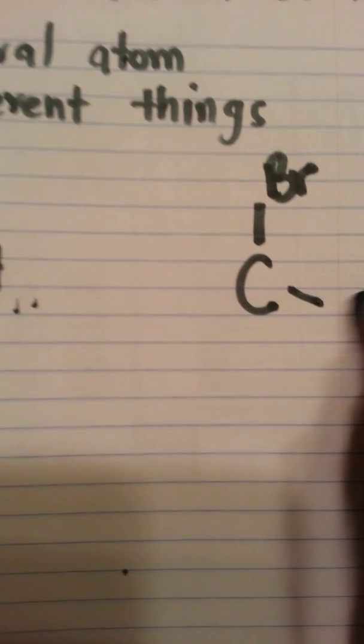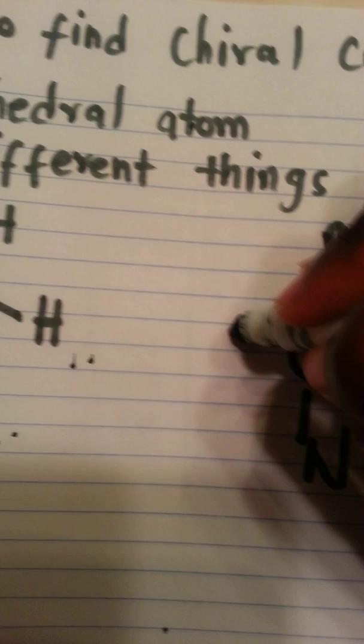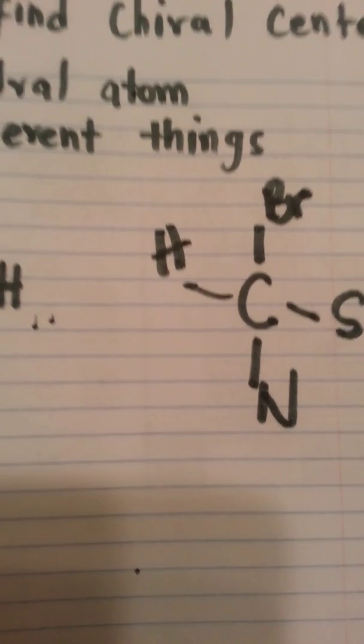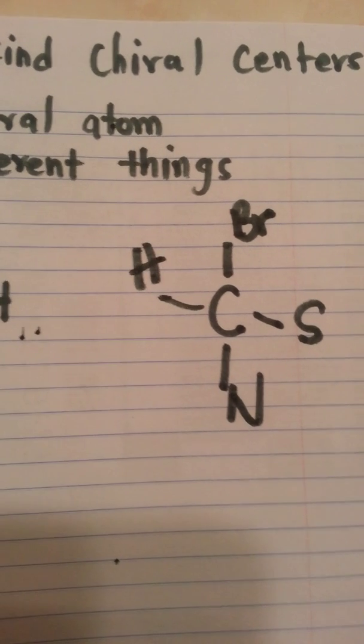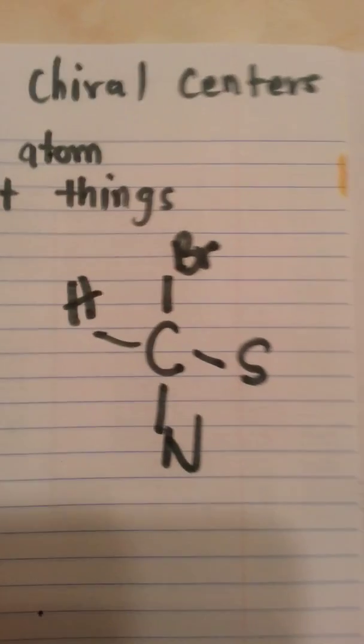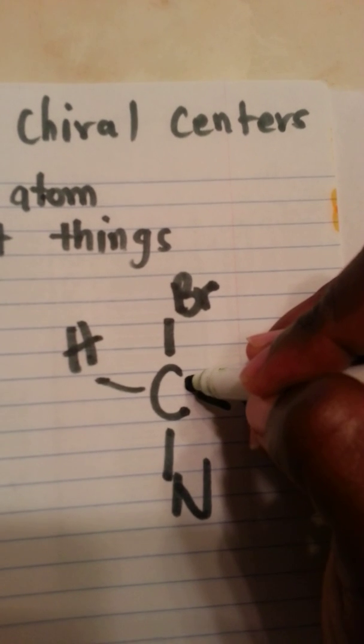In this case, we see that it is bonded to four different things. And hence, this carbon right here—sorry, I was just getting my pen—this carbon right here has a chiral center.